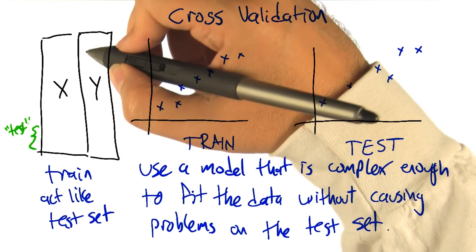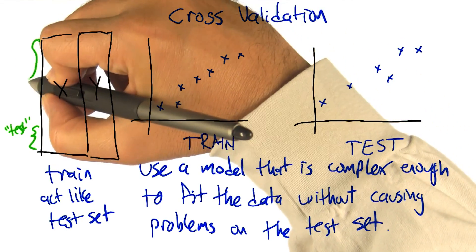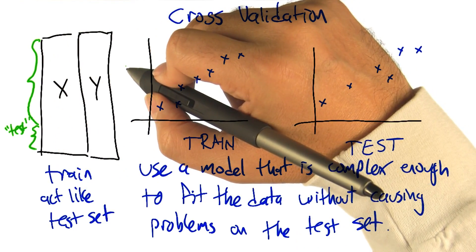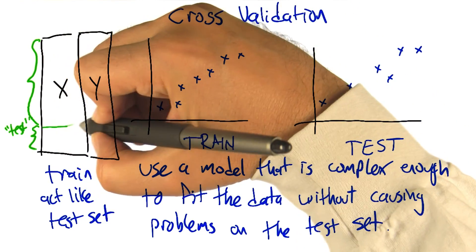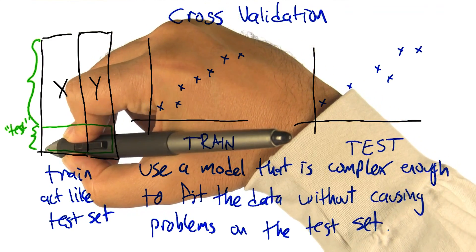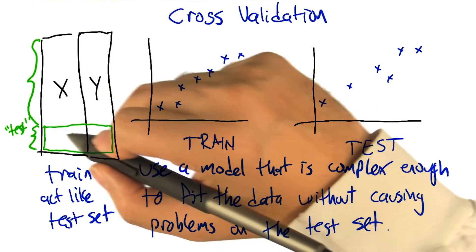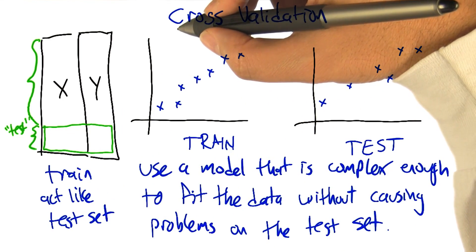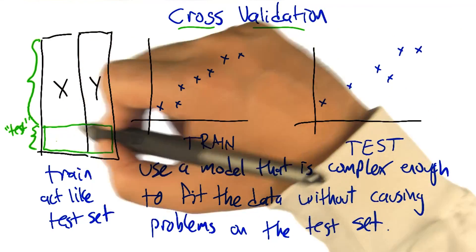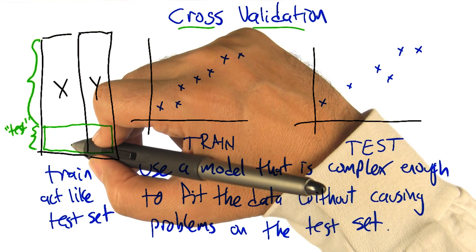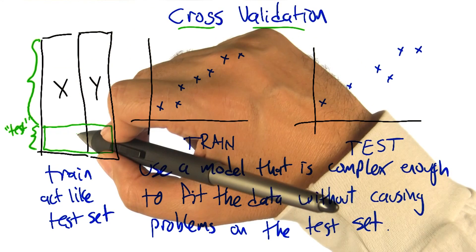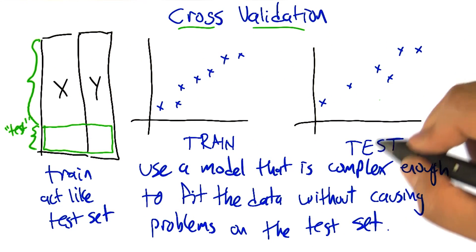Indeed, right? So there's nothing magic about the training set all needing to be used to fit the coefficients. It could be that we hold out some of it as a kind of make pretend test set, a trial test set, a cross validation set. And it's going to be a stand in for the actual test data. That we can actually make use of that doesn't involve actually using the test data directly, which is ultimately going to be cheating.